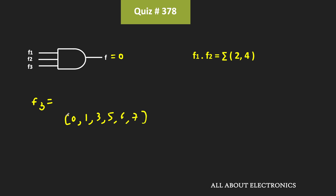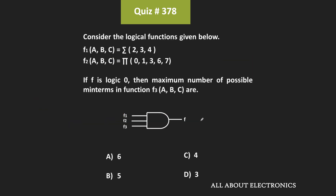That means function f3 can contain any of these minterms or any combination of these minterms, and at the most it can contain all of them. So if function f3 contains all these minterms, the total number of minterms in f3 is equal to 6. We can say that at the most, function f3 can contain total 6 minterms. Therefore, for the given question, this is the correct answer.